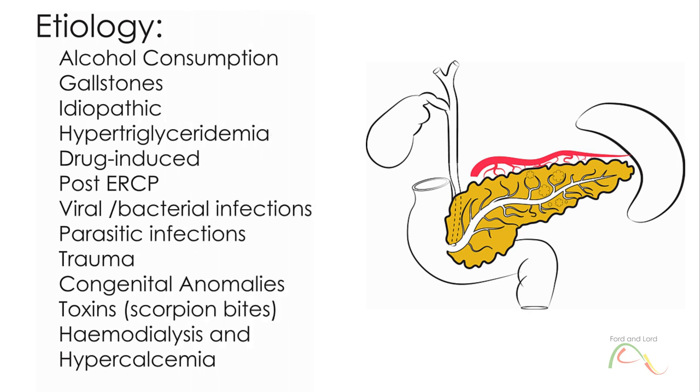The most common cause of acute pancreatitis is alcohol consumption. Gallstones come next. Other causes include idiopathic hypertriglyceridemia, drug-induced post-ERCP, which is an endoscopic and radiologic procedure, viral and bacterial infections, and parasitic infections.